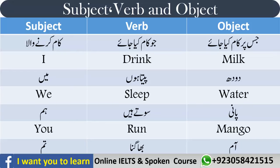سب سے پہلے 'I' — I کا مطلب ہے جب آپ اپنے بارے میں بات کر رہے ہوتے ہیں۔ آپ کبھی بھی کسی دوسرے یا تیسرے بندے کے بارے میں I use نہیں کریں گے۔ I ہمیشہ صرف اپنے بارے میں بات کرتے وقت استعمال ہوگا۔ Verb کی example: 'drink' — پینا ایک action ہے۔ مثلاً: 'I drink milk' — یہاں milk وہ چیز ہے جس پر کام ہو رہا ہے، یعنی یہ Object ہے۔